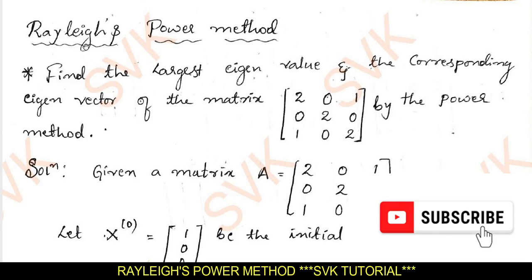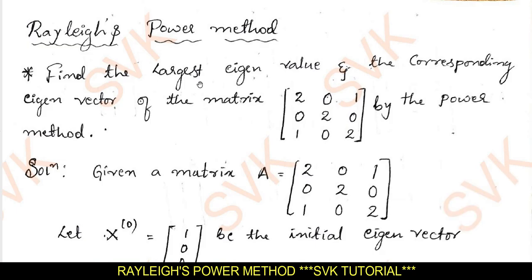Hello everyone, I welcome you all to SVK Tutorials. In this video, you are going to study how to solve problems on Rayleigh's power method — that is, how to find the largest eigenvalue and the corresponding eigenvector for a given matrix. It is one of the easiest methods to find eigenvalues and eigenvectors, and you can easily solve it using a calculator within 5 minutes if you know the concept well.